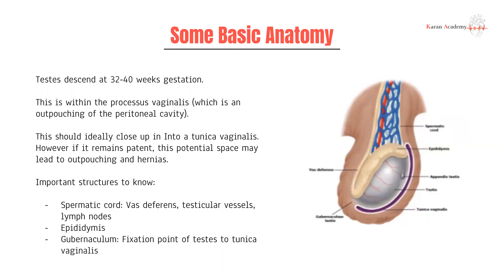We've talked about them in our lecture on hernias previously. Some important structures you need to know: firstly, the spermatic cord and its contents — the vas deferens, the testicular vessels, and lymph nodes. You need to know about the epididymis, and then the gubernaculum, which is a fixation point of the testes to the tunica vaginalis, and has a really important role in conditions like testicular torsion.